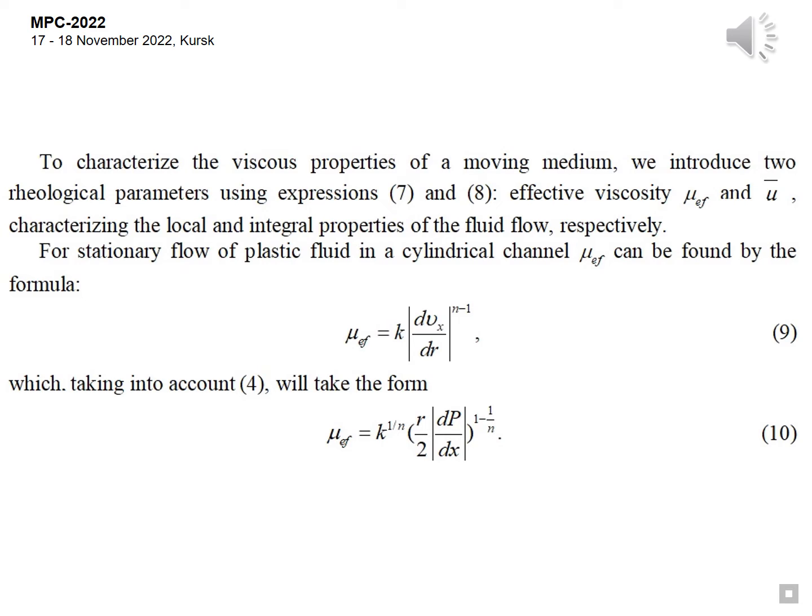For a stationary flow of a pseudo-plastic fluid in a cylindrical channel, it can be found by the formula 9, which, taking into account 4, will take the form 10.